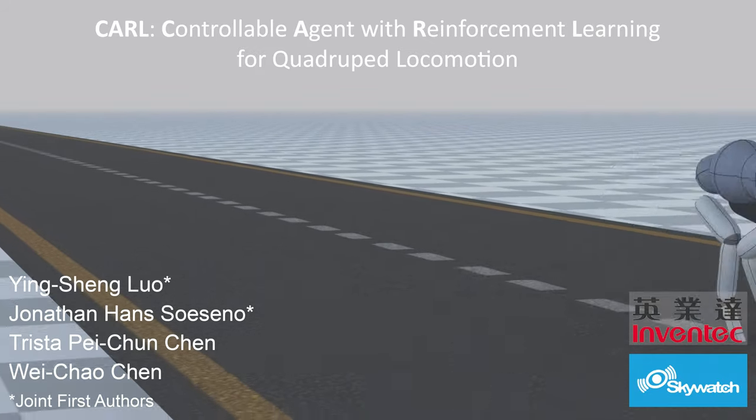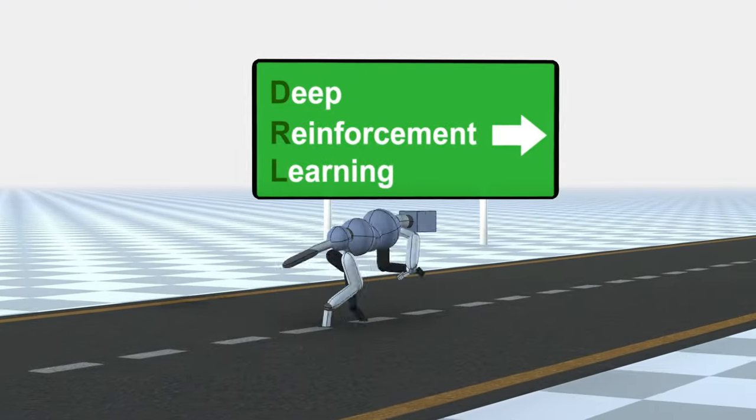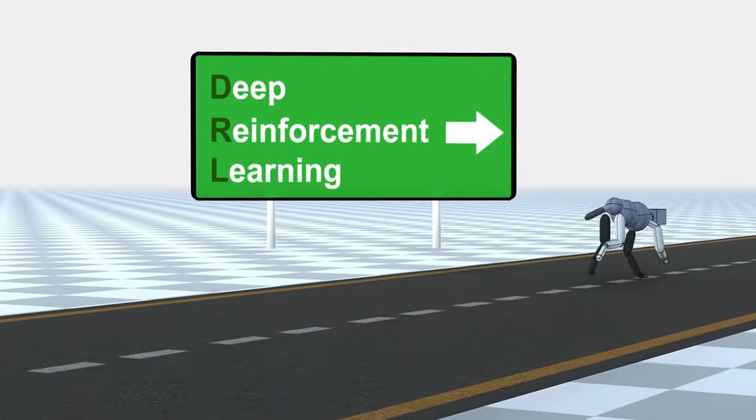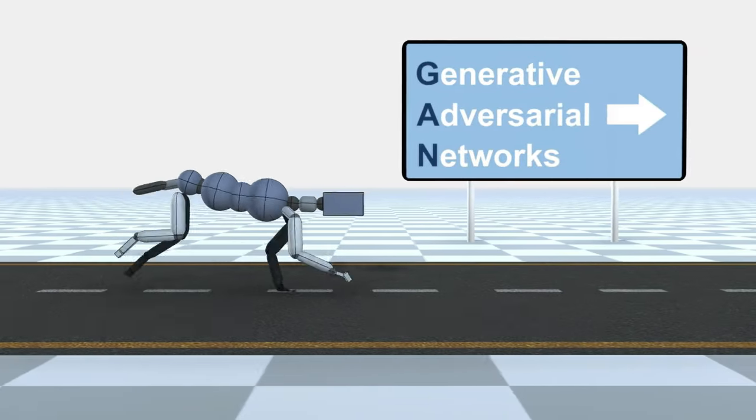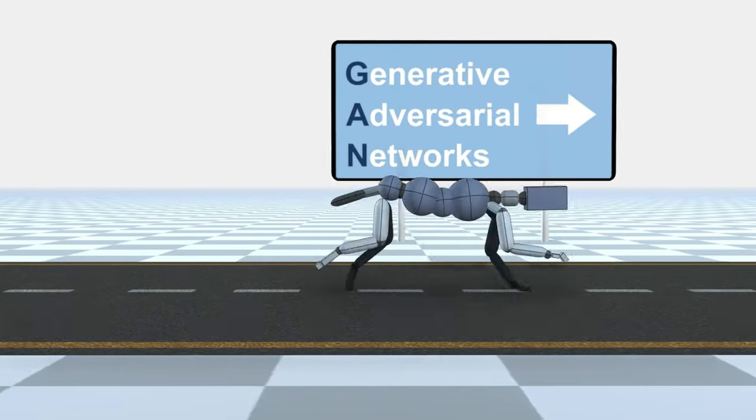Meet Carl, a four-legged character trained using deep reinforcement learning and generative adversarial networks.